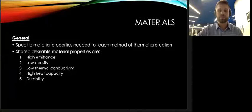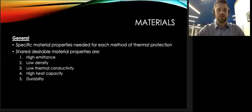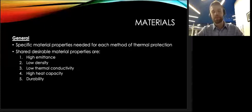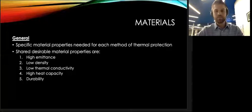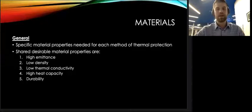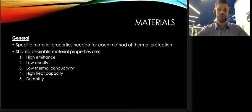So now moving on to specific material properties for each type of thermal protection system. Despite having differences, they do share some commonalities. Some of these commonalities or desirable material properties for thermal protection systems in general are high emittance, low density, low thermal conductivity, high heat capacity, and durability. Low density is important because any weight savings when going to space is super important. Low thermal conductivity is important so that high or hot boundary layer temperature cannot make its way to the vehicle surface itself. These thermal protection systems are very bad at conducting heat effectively, which makes them good at protecting the vehicle.